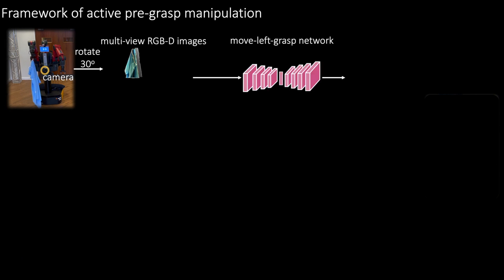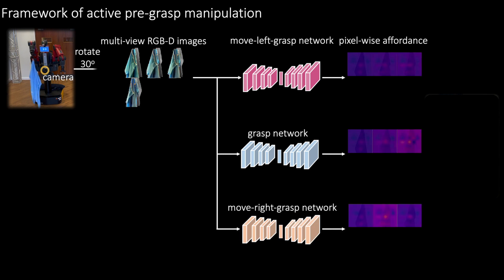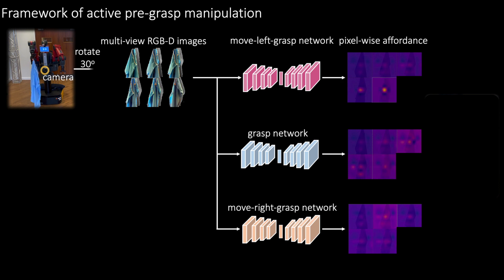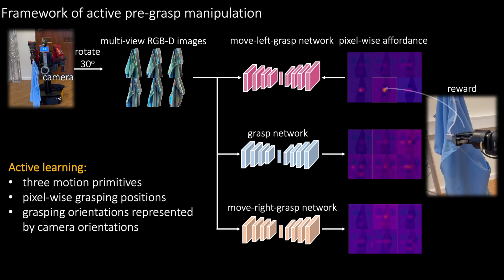Next, we present the framework of active pre-grasp manipulation. Multi-view RGBD images of the hospital gown are fed into three fully convolutional networks to respectively infer pixel-wise affordance for three motion primitive behaviors. The action is selected as the pixel with highest estimated affordance. The robot receives a reward if it successfully grasps the gown with a clear single layer.